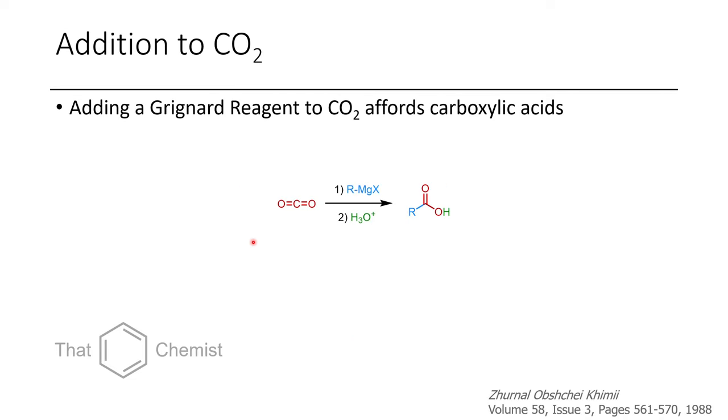Another useful trick is if you want to do a one-carbon extension of a carbon-containing chain, you can treat a Grignard reagent with carbon dioxide, and so that would convert a Grignard reagent into a one-carbon homologue, which is like the same shape, but it's one carbon longer, with a carboxyl group on the end.